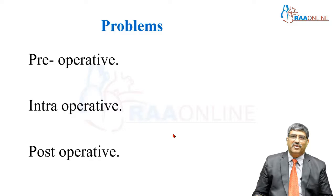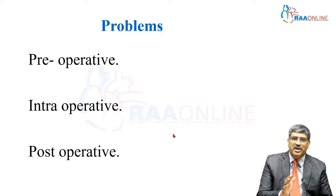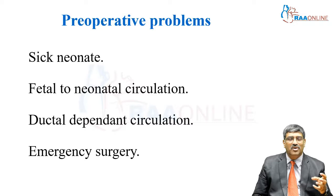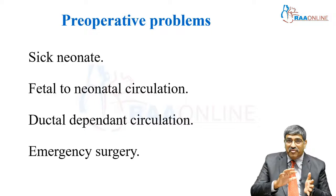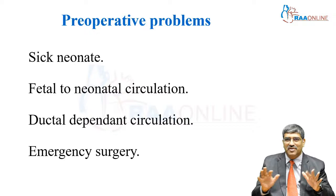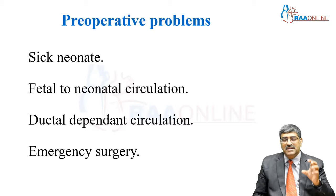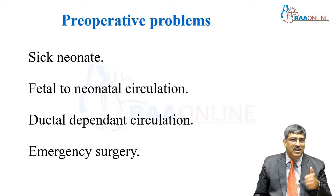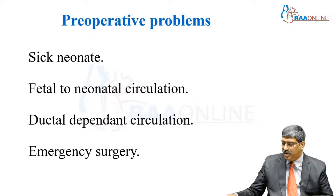What are the problems you are going to face while doing a BT shunt? Problems can be divided into preoperative, intraoperative, and postoperative periods. Preoperatively, you are going to have a sick neonate whose saturation is very, very low — a sick cyanotic neonate. There is also the transition from fetal circulation to neonatal circulation, which are totally different. Sometimes a ductus-dependent circulation will be present, and before the ductus closes within 24 to 48 hours, you have to perform the BT shunt — it becomes a dire emergency and you must keep the ductus patent until the shunt is done. All the problems of emergency surgery will also be present in the preoperative period.